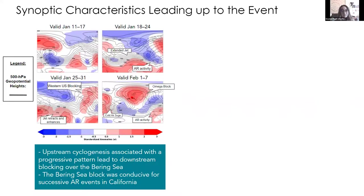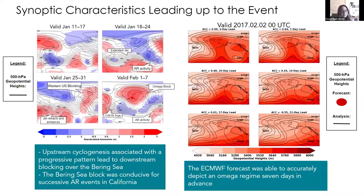Next we explore the synoptic characteristics leading up to this AR event. The figures on the left show weekly 500 hPa geopotential height anomalies where forecast values are shaded and observed values are the contour lines. A progressive pattern characterized by an equatorward-shifted and extended jet along with cyclogenesis in the central Pacific was observed. Cold air surges off East Asia increased the tropospheric meridional temperature gradient, enhancing and retracting the North Pacific jet, leading to enhanced cyclogenesis in the central Pacific induced by deep western North Pacific troughing. This cyclone activity aided downstream ridging over the western U.S. and subsequently over the Bering Sea, with poleward latent heat transport — creating omega block or ridging conditions conducive to multiple AR events in California. The figures on the right show forecasted daily geopotential heights at 3 to 21-day lead, and the observed omega block is only accurately forecasted up to seven days in advance.